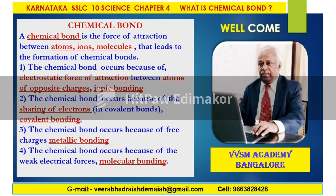A chemical bond occurs because of free charges — metallic bonding. When the chemical bond occurs because of weak electrical forces, it is called molecular bonding. Different types of atoms, ions, and molecules exist. Forces of attraction and repulsion take place during the process of atomic structures, atomosity, molecularity, and ions — all those things contribute to different types of chemical bonds.